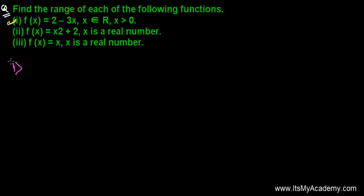So we are going to deal with the first one, and then the rest, the second and third, we'll be doing in the next videos. So here the function is f of x equals to 2 minus 3x, where x is from real numbers, and x is always greater than 0.